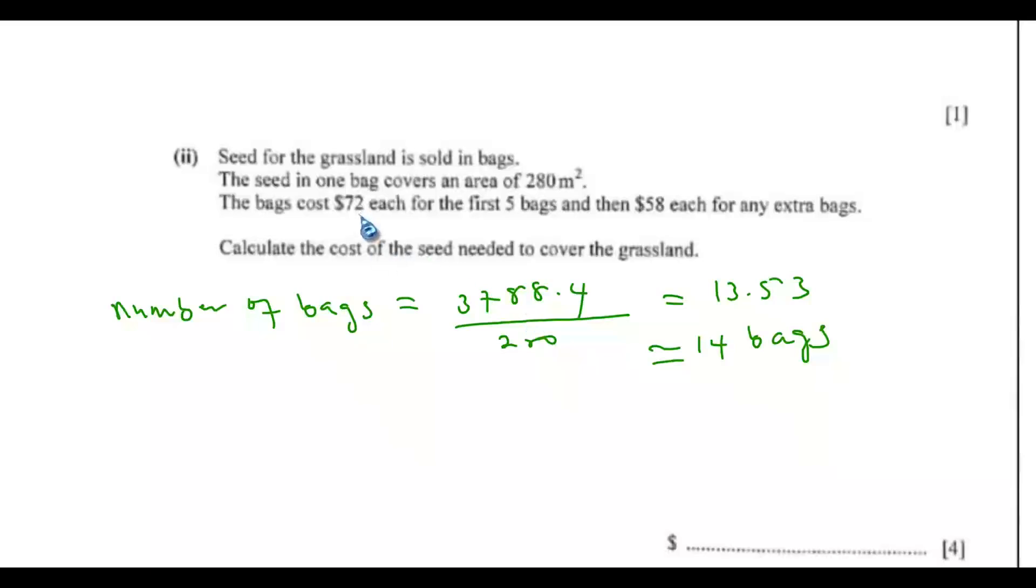Now the first five bags cost $72. So that means the cost will be equals to 5 into $72, then plus out of 14, so we have the price of 5, so the remaining bags will be $58 each. So that is the remaining 9. So we have 9 into 58. So if you input this into your calculator, you should get $882.